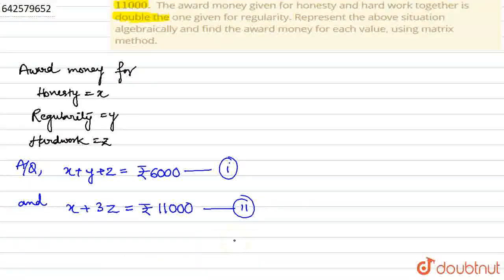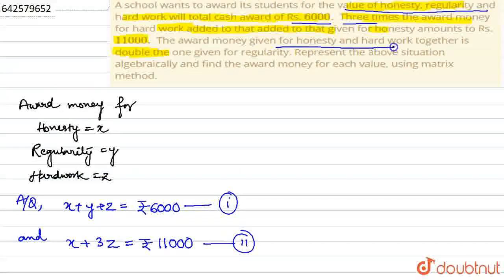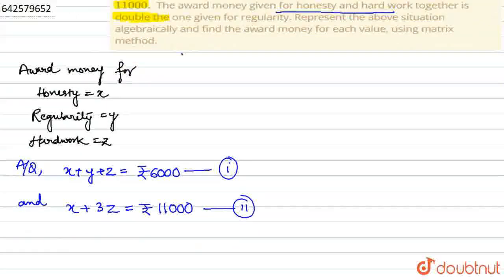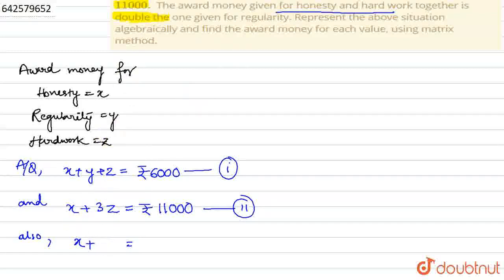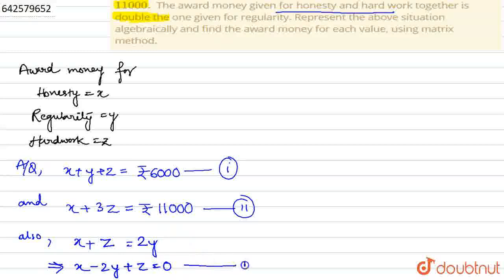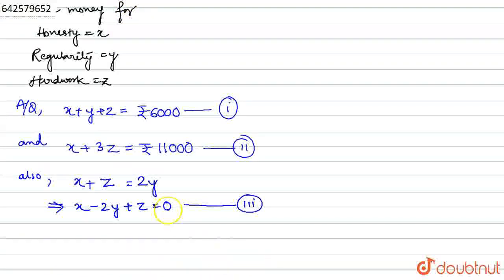Finally, it is given that the award money for honesty and hard work together is double the one given for regularity. So we can write x plus z equals 2y, which rearranges to x minus 2y plus z equals 0. This is the third equation.